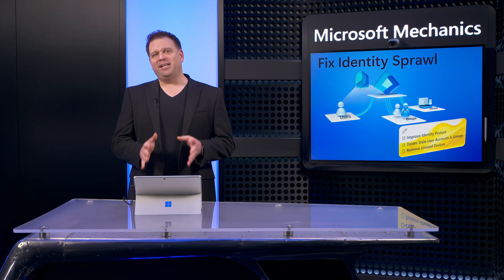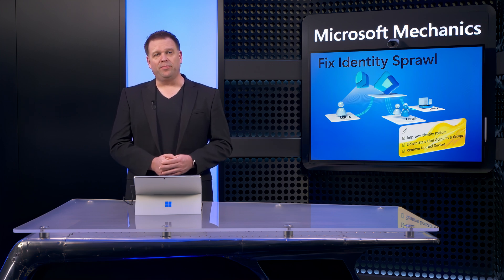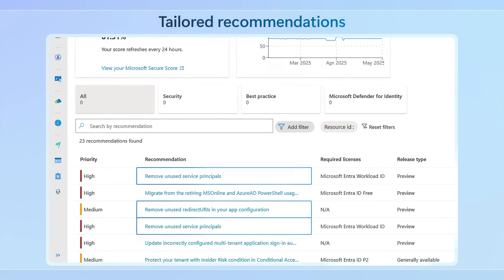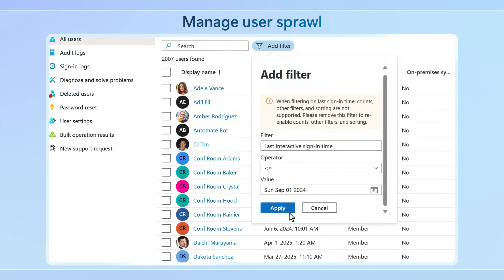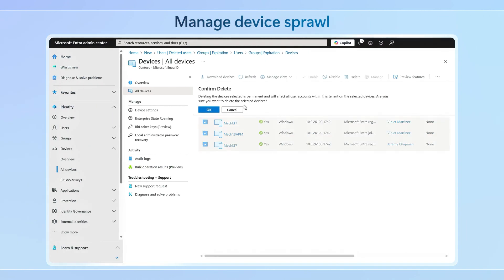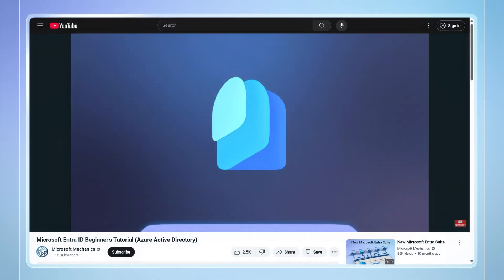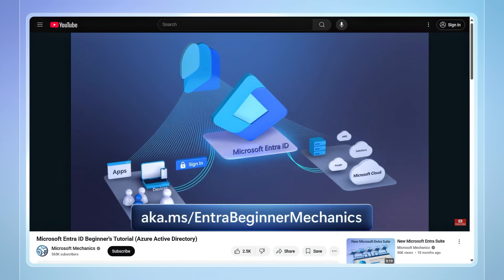Now these are identity management challenges that left unaddressed will introduce security vulnerabilities, but there are ways to get them under control. Using recommendations tailored specifically to your company to help you better secure and optimize your running environment, along with techniques to locate identity sprawl with users, groups, and devices, then delete stale objects in your directory. This is part two in our Microsoft Entra Beginners tutorial series, and I'll link you to part one at aka.ms/EntraBeginnerMechanics.